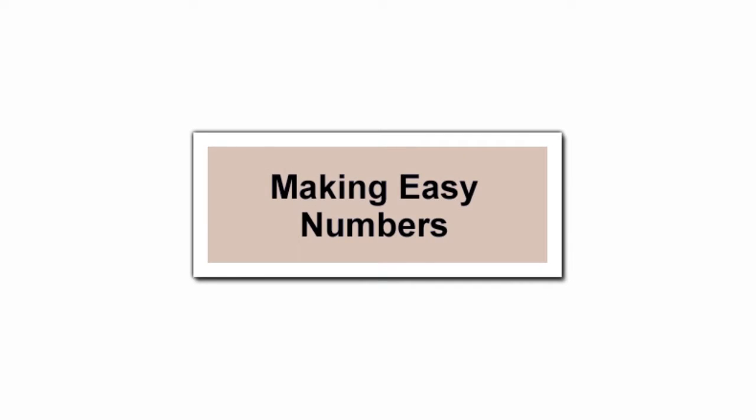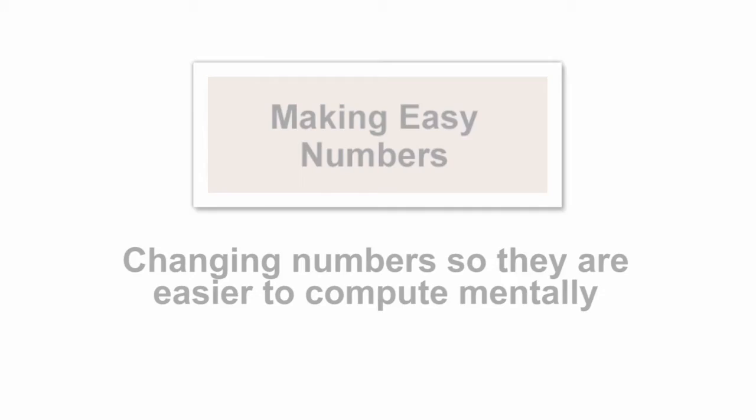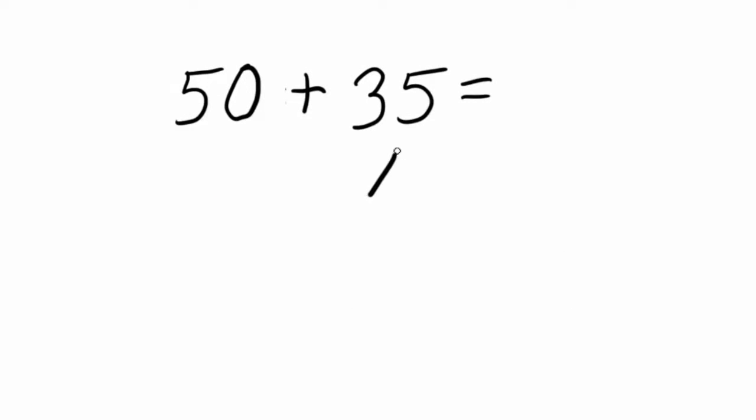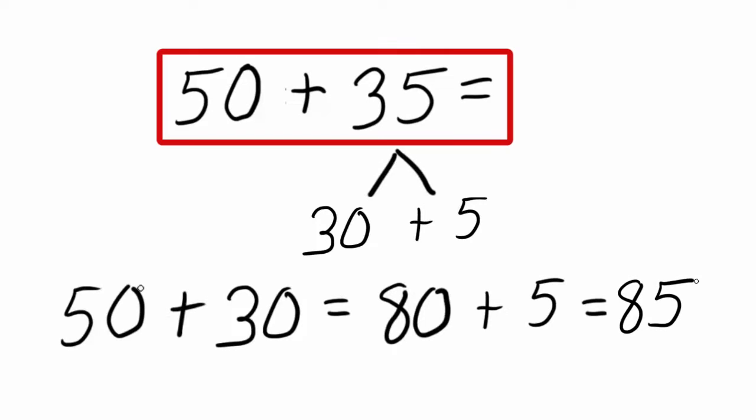Making easy numbers. 50 plus 35. 50 plus 30, which is 80, plus 5, which is 85. So 50 plus 35 gives an answer of 85.